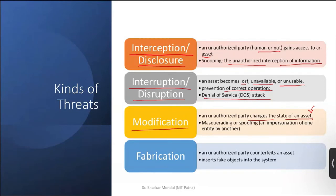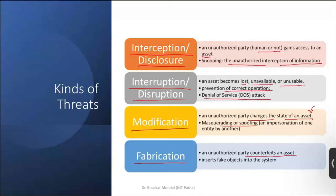Then masquerading or spoofing — it is impersonation of one entity by another. And finally, fabrication. The difference is that fabrication is an unauthorized party counterfeiting an asset. Like original currency versus fake currency — fake currency is not called a modification of the original, it is called fabrication. In modification, the whole thing stays the same but a little bit is changed.